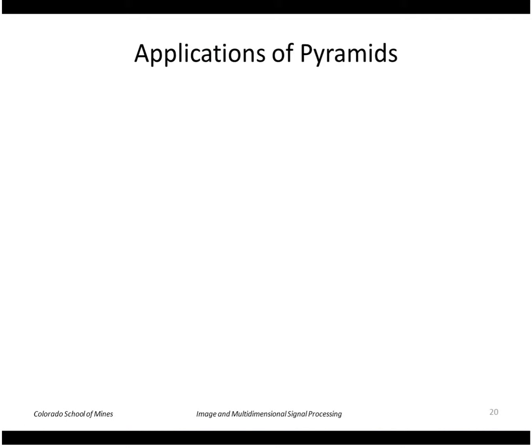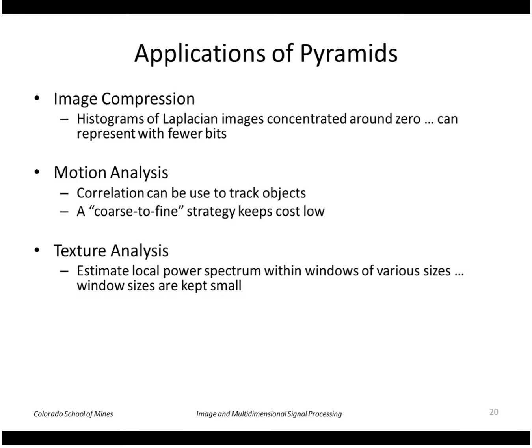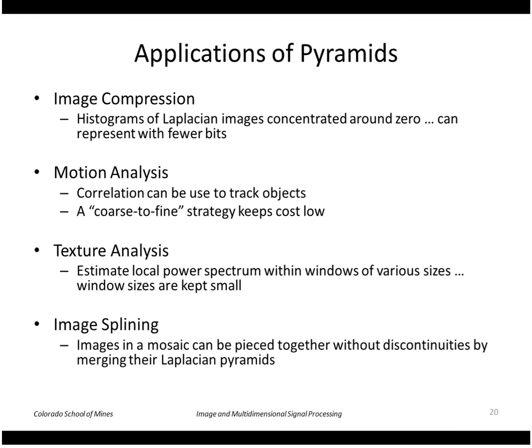Some applications of pyramids: image compression is one we already discussed. Motion analysis is another good one — using a coarse-to-fine strategy, we track objects in the coarse-level small approximation images, and if we find the object there, we use that as a search region in a higher resolution image to keep the overall cost low. We can also do texture analysis over windows of varying sizes, and image splining, where we piece together mosaic images so that the seams between them don't show.